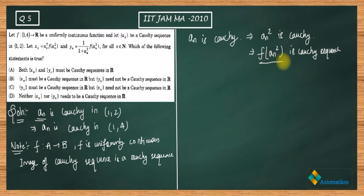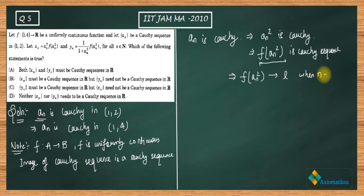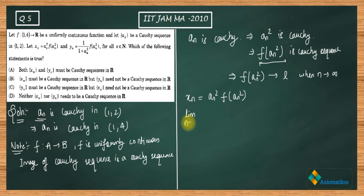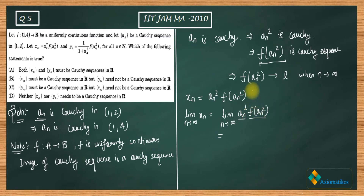Since f(an²) is a Cauchy sequence, it has a specific meaning — it will be used for xn and yn. Since f(an²) is Cauchy, it is convergent in ℝ; let us say it converges to L as n → ∞. Now let us check what xn and yn are. xn is defined as an² · f(an²), so let us check whether it is convergent.